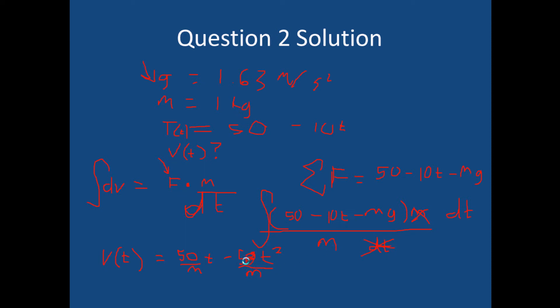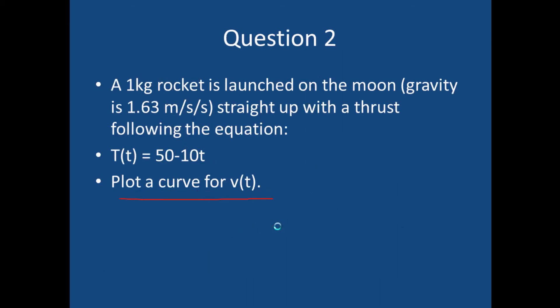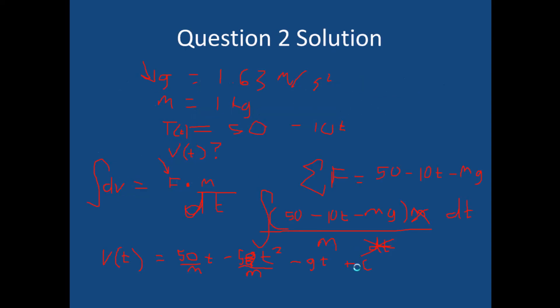Whoops not 50 t squared, lots of mistakes. And then we'll do minus g times t, and that should be everything plus c I guess. Except I think we might be told that it starts from rest. No we're not told that. Okay so there could be some initial velocity there. All right so there we have a function for velocity. I'm not going to graph it, you can do that yourself if you really want to. But there we have it, that's all I have for this quiz.